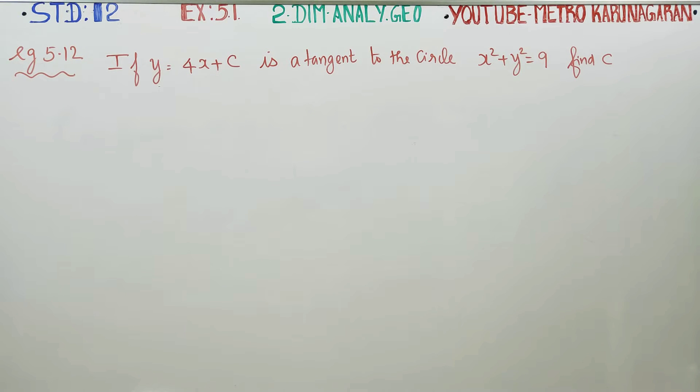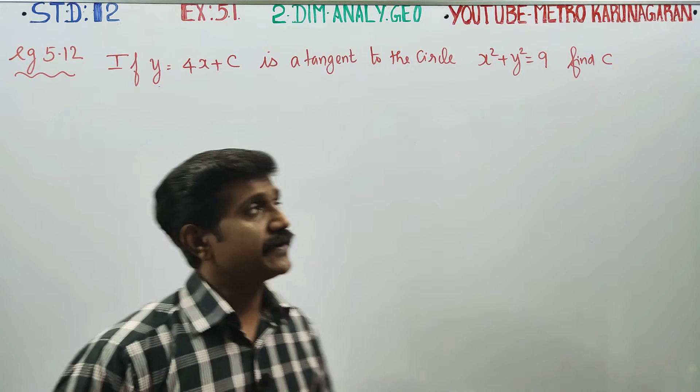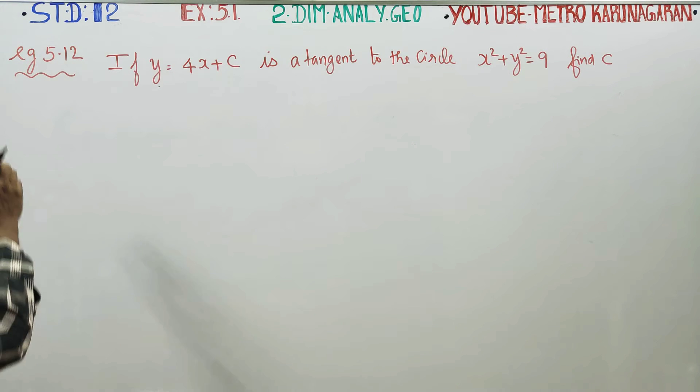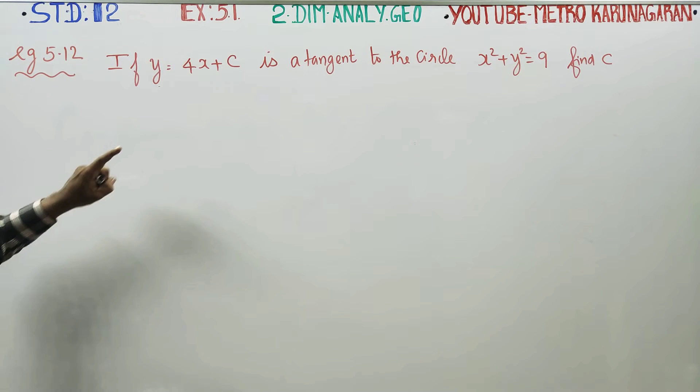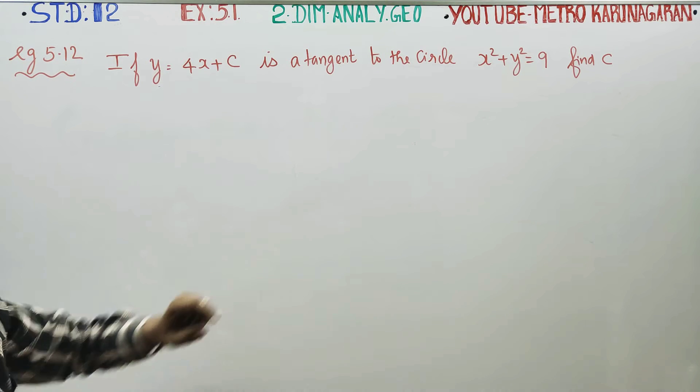Dear 12 standard students, in exercise number 5.1, two-dimensional analytical geometry, related example 5.12. If y is equal to 4x plus c is a tangent to the circle, find the value of c.